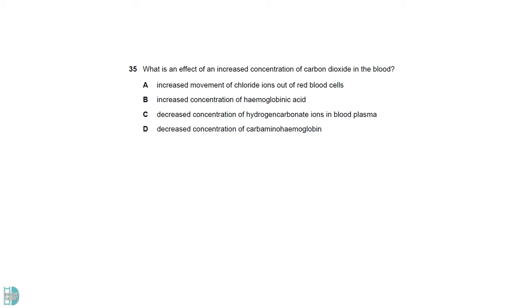When there is more carbon dioxide, there will be more carbonic acid forming in the red blood cells. This leads to a greater concentration of hydrogen carbonate ions and protons due to its dissociation. Protons will bind with hemoglobin, forming hemoglobin acid. So B is the right answer. A is wrong as chloride ions should move into the cell. C is wrong as it is the opposite of what happened. D is incorrect as more carbon dioxide should cause more carboxyhemoglobin to be formed.